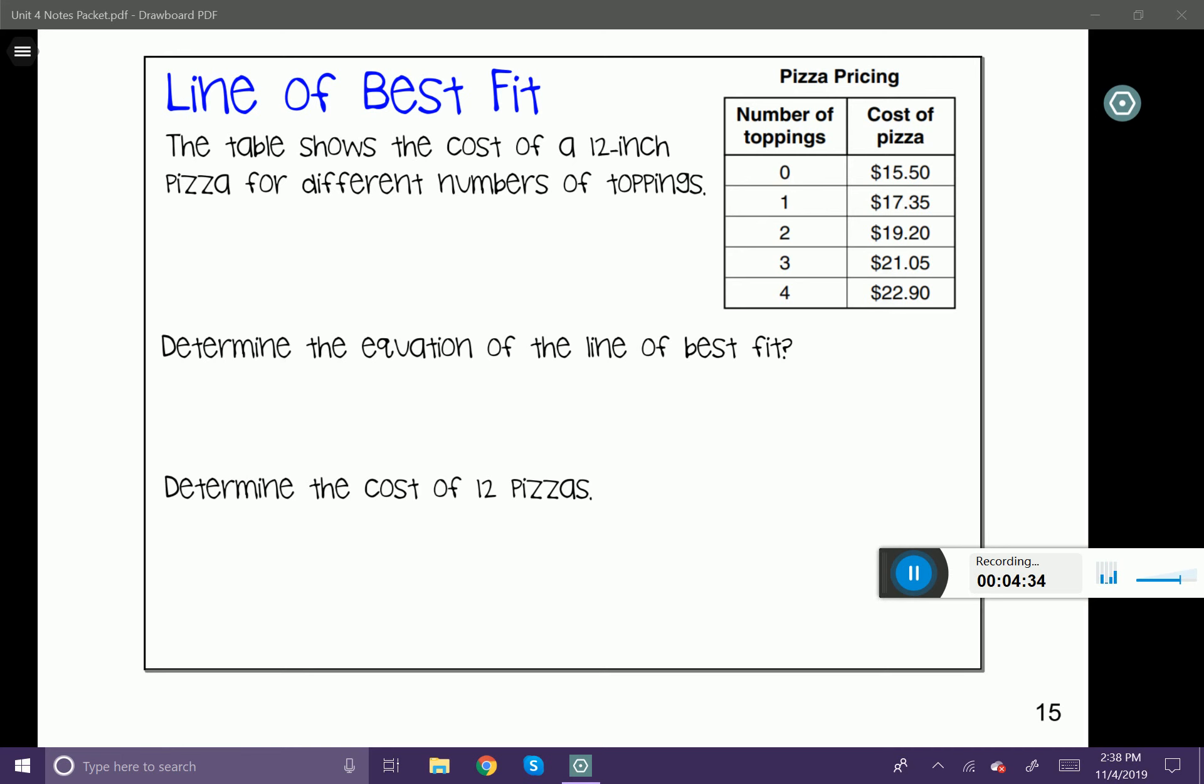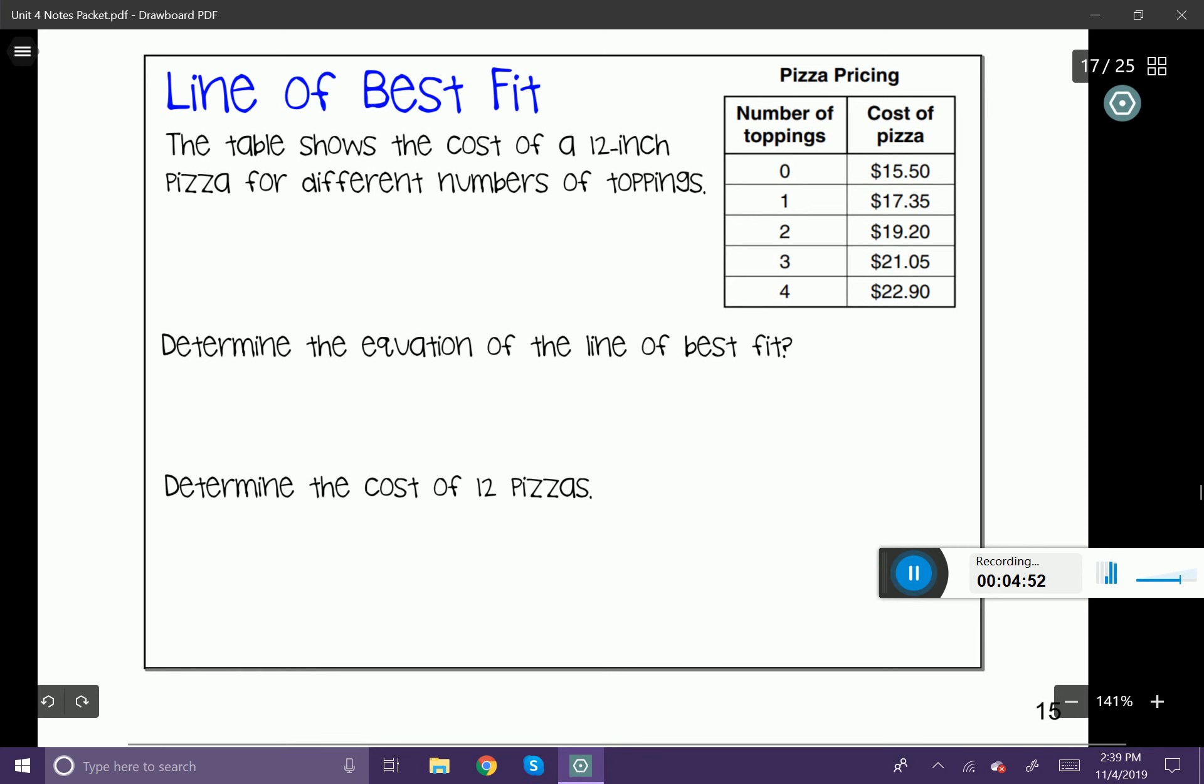We're then going to choose option four, LinReg ax plus b. Now go ahead and press ENTER a couple of times. You'll see that it's going to calculate an equation in the form y equals ax plus b. Obviously, that's the same thing as y equals mx plus b. So I'm going to go ahead and write the equation of the trend line: y equals 1.85x plus 15.5. This is the equation of my trend line.